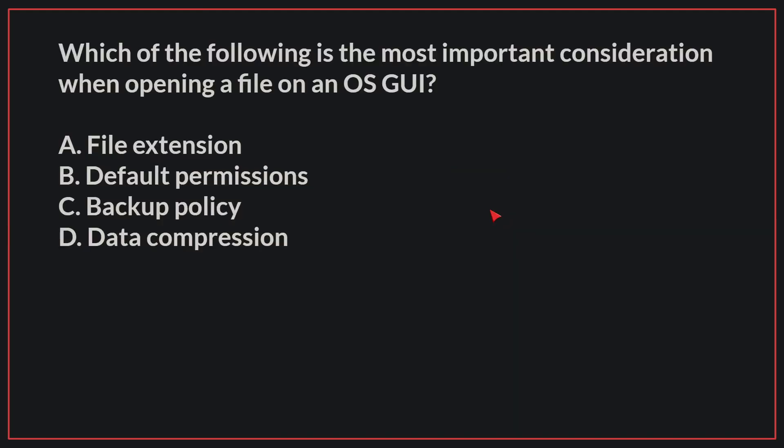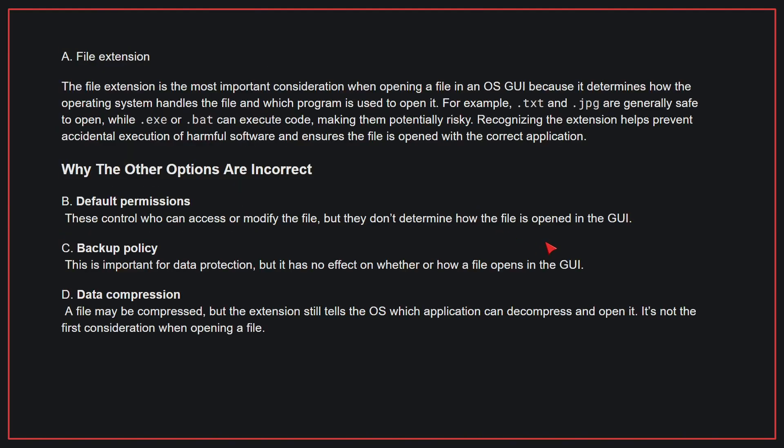Which of the following is the most important consideration when opening a file on an OS GUI? The correct answer is A, file extension. The file extension is the most important consideration when opening a file in an OS GUI because it determines how the operating system handles the file and which program is used to open it.